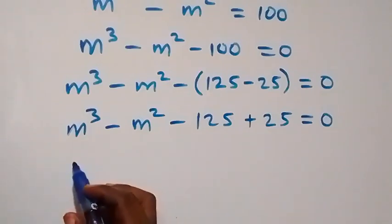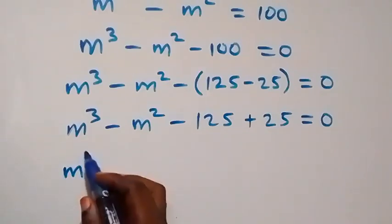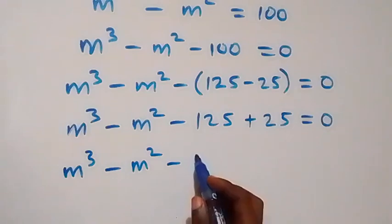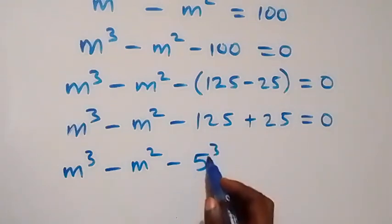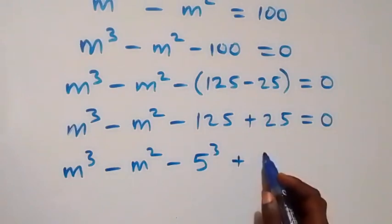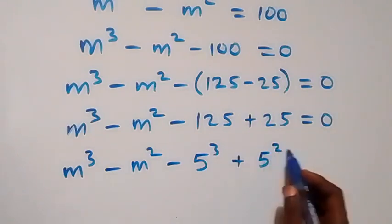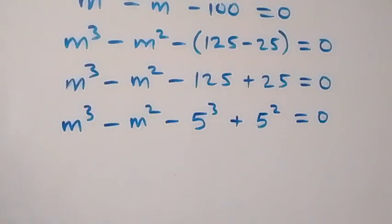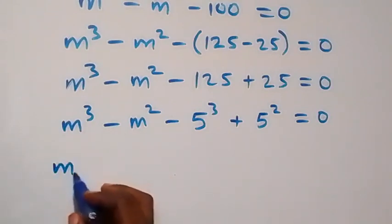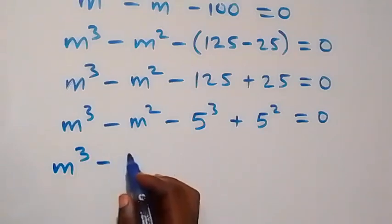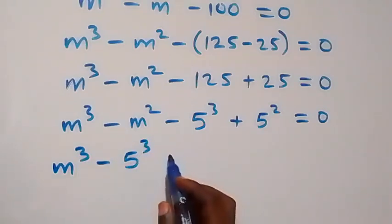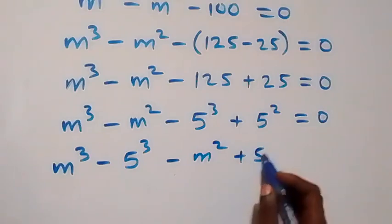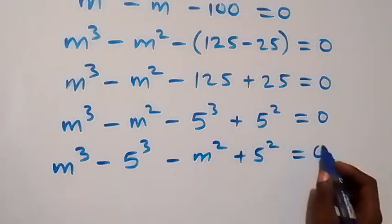This can be written as m raised to power 3 minus m squared, and minus 125 expressed as 5 raised to power 3, then plus 5 squared, equals zero. Let's bring the power-of-3 terms together: m raised to power 3 minus 5 raised to power 3, then minus m squared plus 5 squared, equals zero.